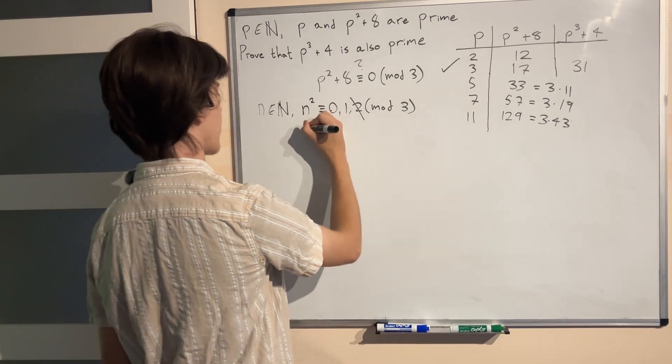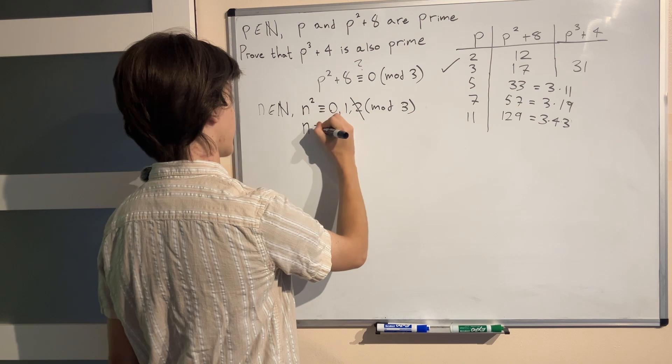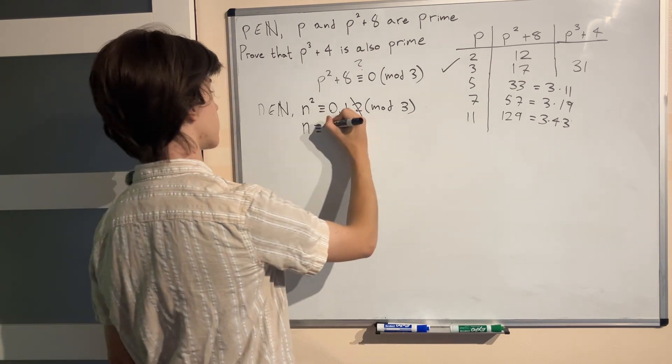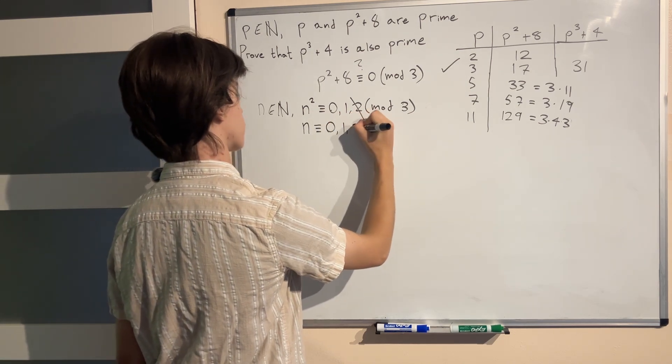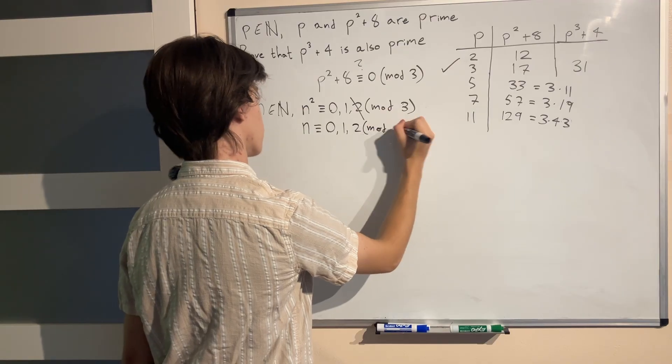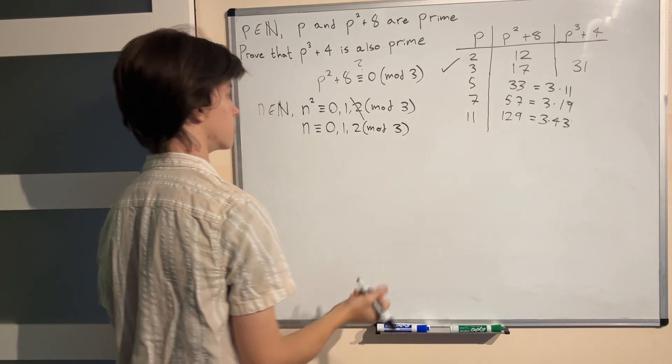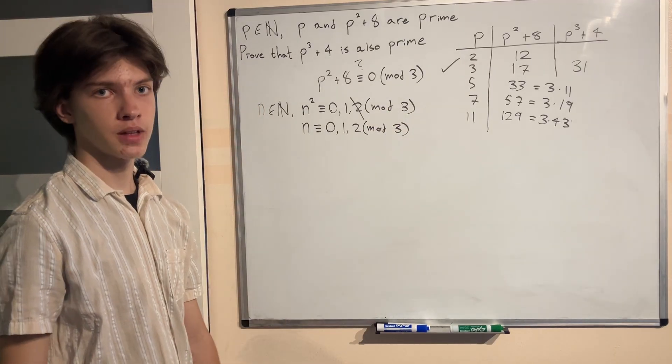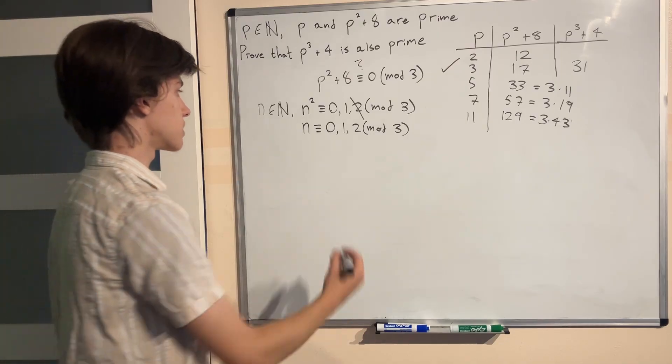First consider just n the natural number. And because it's any natural number it can obviously be congruent to either 0, 1 or 2 in mod 3. No questions here. We're not doing anything special to n. But once we square them look what happens.